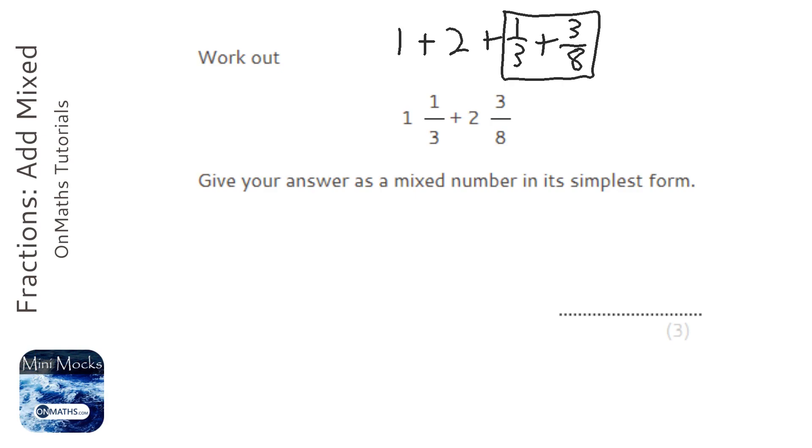I find it easier just to have one method for all operations with mixed numbers, so we're going to make them top-heavy. The way of doing that is you times the big number by the bottom and then add it to the top. Times the big number by the bottom and add it to the top, and that gets rid of the big number.